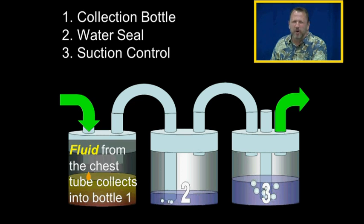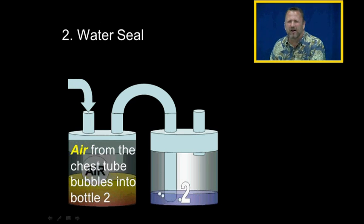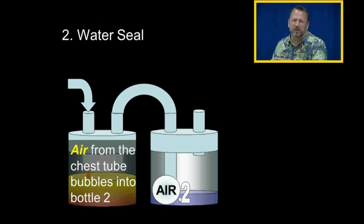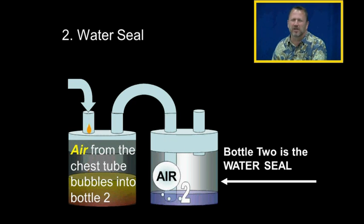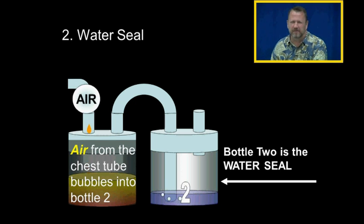We've talked about the collection bottle in a three-bottle system. Fluid from the chest collects into bottle one. Air from the chest tube bubbles into bottle two. Bottle two is the water seal of the system.